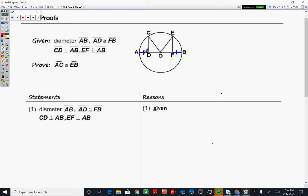We have CD perpendicular to AB and EF also perpendicular to AB. Now in every circle we know that all radii are congruent, so I'm just going to note that radii OE, OC, OD, and OB are all congruent.